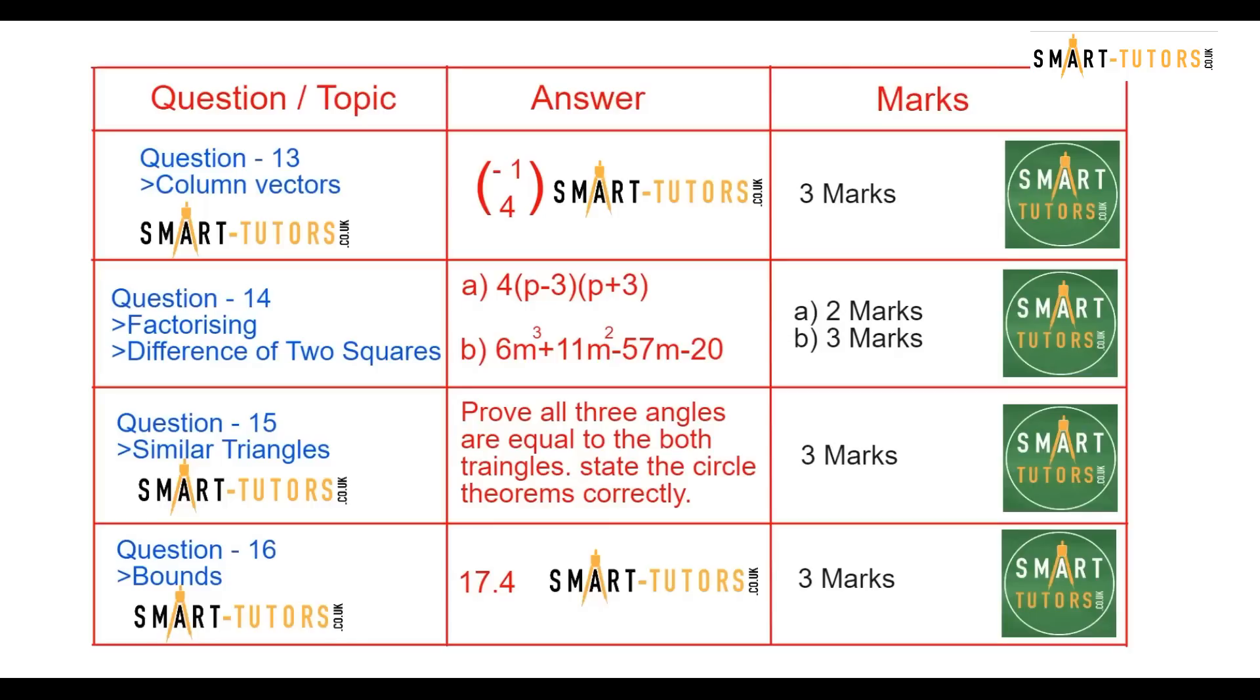Similar triangles. Two similar triangles are given. They have asked you to prove they are similar triangles. Both similar triangles are inside a circle. So you can use the circle theorem, state the circle theorem correctly and prove all the three angles are equal to both triangles to get the similar triangles correct.